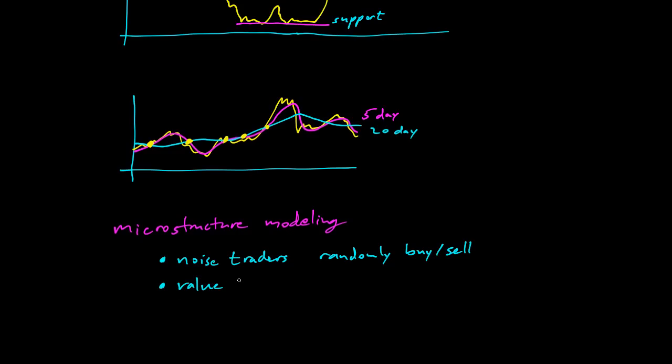You might simulate some value traders. Value traders might have some threshold T. So if the asset is below T, they buy. If the asset is above T, then they sell. So they're trying to buy low and sell high. They have some idea of how much they think the asset is worth, which is T here. And they're buying and selling based on how the market responds.